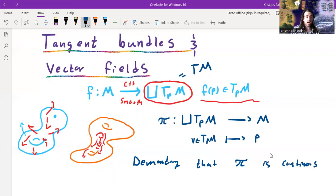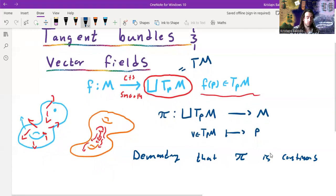So remember, a map of topological spaces, let's say have a map going from X to Y is said to be continuous if for every open set U of Y, the inverse image of U in X is an open set.